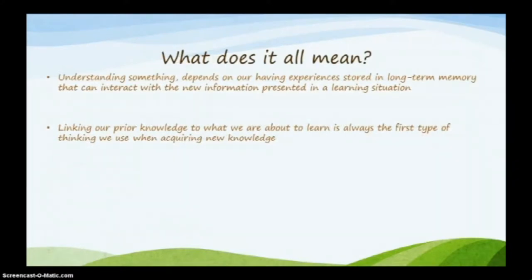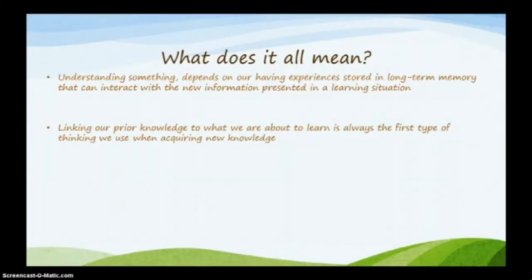So what does it all mean? Understanding something depends on having experiences stored in long-term memory that can interact with new information presented in a learning situation. Linking our prior knowledge to what we are about to learn is always the first type of thinking we use when acquiring new knowledge. If we don't have prior knowledge of something, it makes it much harder to interpret and digest new material.